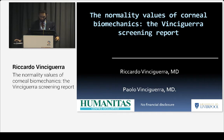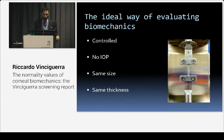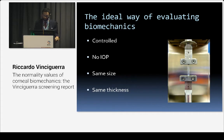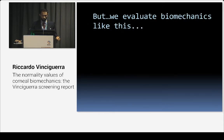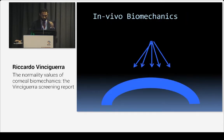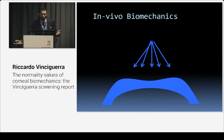Thank you, Cinzia, for the introduction and for making my life much easier after this explanation. The ideal way of evaluating biomechanics would be in a controlled stress-strain setting with no IOP and the same size and thickness. Unfortunately, this is not possible with alive patients. So what we have to do is use an air puff to deflect the cornea, and from this we have to evaluate biomechanics.